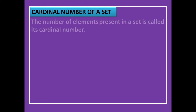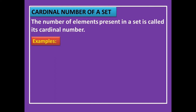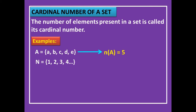Now let us move to the cardinal number of a set. The number of elements present in a set is called its cardinal number. For example, if A = {a, b, c, d, e}, then A has 5 elements, so the cardinal number of A — written as n(A) — is 5. For the set of natural numbers N = {1, 2, 3, 4, ...}, the cardinal number is infinite.